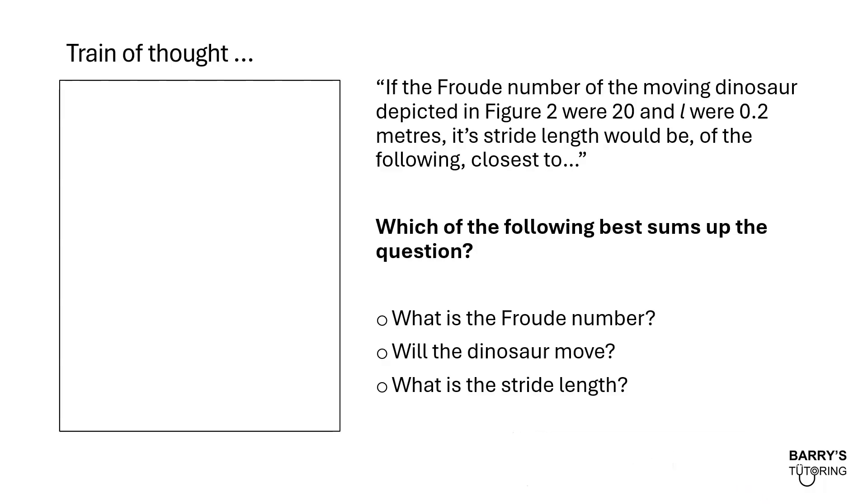So this is an extract from the actual question and it's from the actual question stem. If the Froude number of the moving dinosaur depicted in figure 2 were 20 and L were 0.2 meters, its stride length would be of the following closest to. So the question for you is which of the following best sums up the question? What is the Froude number? Will the dinosaur move? Or what is the stride length?